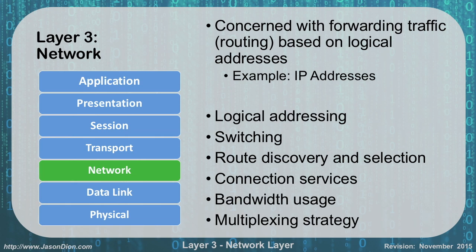With layer 3, we are concerned about forwarding our traffic based on logical addresses. The most common one you're going to see is IP addressing. The other things we're concerned with at layer 3 are logical addressing and switching. When we talk about switching, we're not talking about switches — we're talking about how data goes from one network to another through routing. When routers do their transmissions, they call that switching, which is not a switch.